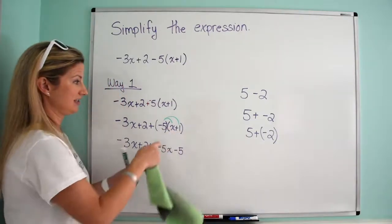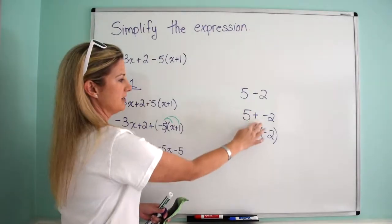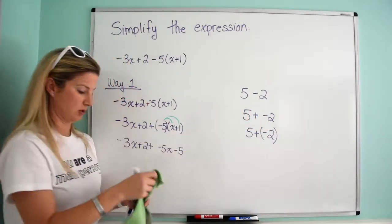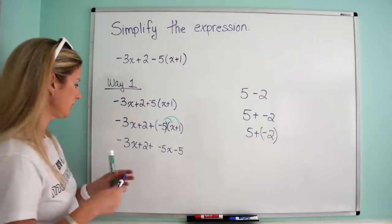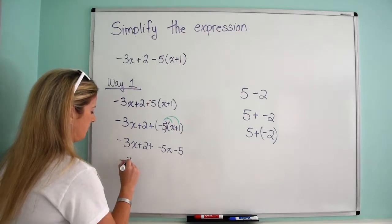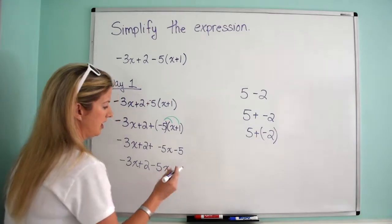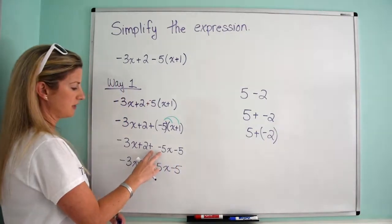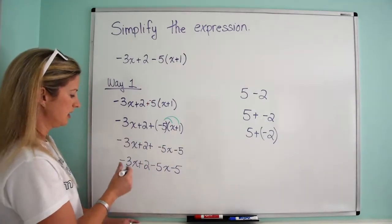All right, now we have that situation of the plus negative 5. So we can then go backwards, because I know a lot of people are used to seeing it with that shorthand. So I will just rewrite it as negative 3x plus 2, and then plus negative 5x is the same as minus 5x, and then minus 5. Now, if you're OK with keeping it as that, that's fine too. Either way is good.